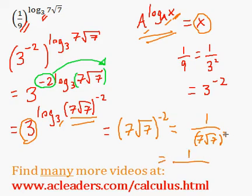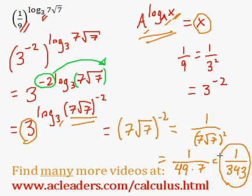And now 7 squared is 49, the root of 7 squared is just 7. So the final answer is 1 over 49 times 7, which is 343. 1 over 343 is what this massive expression is equivalent to. That's it.